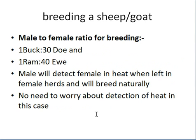For breeding ratios, we need one buck for every 30 does, and one ram for every 40 ewes. When we release the male into the female herd, he will automatically detect which female is in heat and breed her, so there is no need to worry about heat detection in this case — the male will find and breed the female in heat on his own.